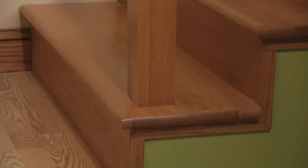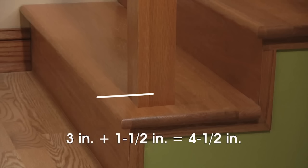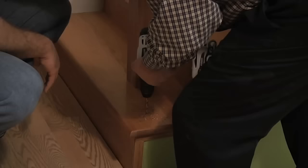To find the location of the bottom newel, we take the width of the newel, in this case three inches, add half the width, another inch and a half, to give us a total of 4 and a half inches. Measure 4 and a half inches from the front of the step and the same amount from the side. This is where the center of the post will be. Now drill a pilot hole.